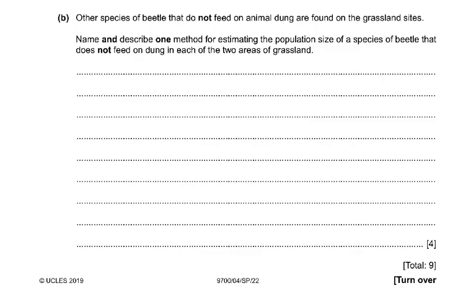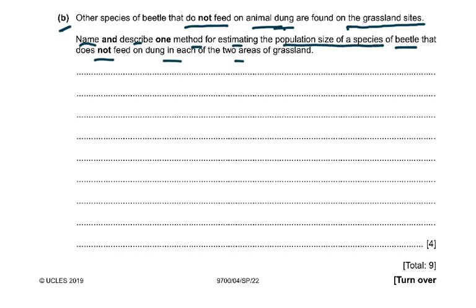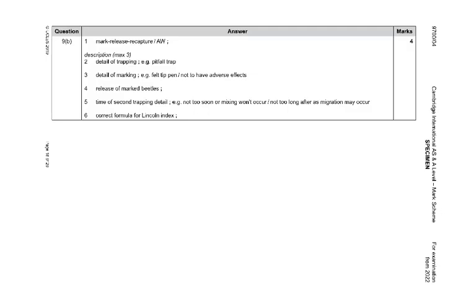The last part of question 9: other species of beetle that do not feed on animal dung are found on the grassland sites. Name and describe one method of estimating the population size of those beetles. For mobile animals we use mark-release-recapture. Use pitfall traps to collect them, mark them with a non-toxic felt pen, release the marked beetles, then recapture after a day or two, and apply the Lincoln's index formula.